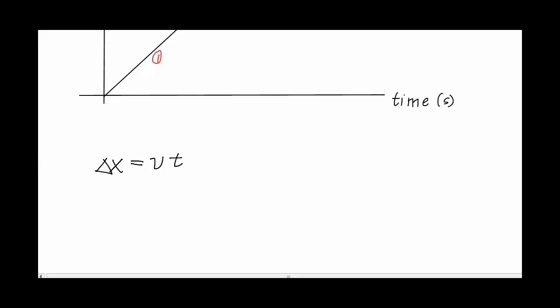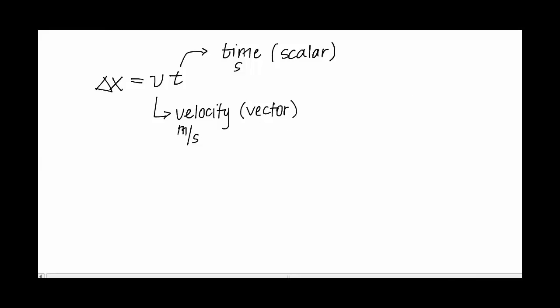So position, our change in position is velocity times time for constant velocity, constant speed type problems. So V, this V stands for velocity. It's a vector. Measured in meters per second. And T is time, measured in seconds. It's actually a scalar. Time has no direction. Time cannot be left or right. Measured in seconds. And then delta X is our displacement, also known as change in position. Again, synonyms. It's a vector. And it's measured in meters.